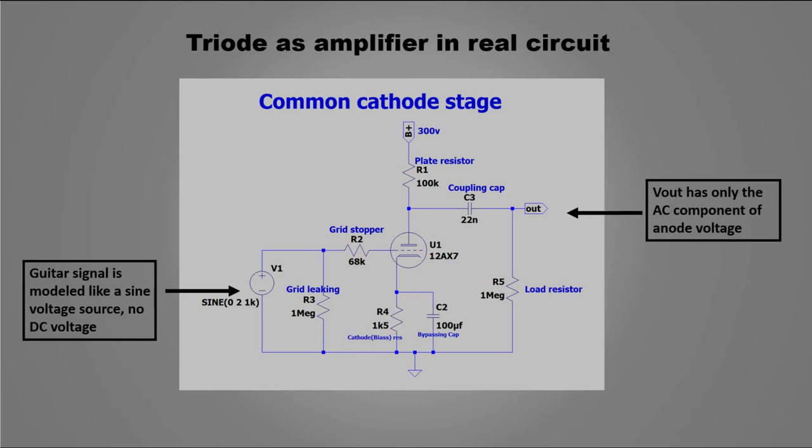Resistor R4 is the bias resistor or the cathode resistor. When the tube is heated, and the power supply is connected, certain current goes from the plate to the cathode. And by Ohm's law, certain DC voltage appears in the resistor that polarizes the cathode.